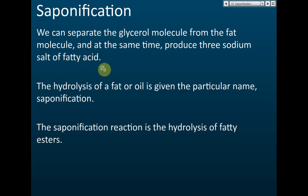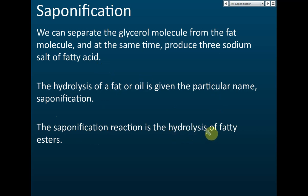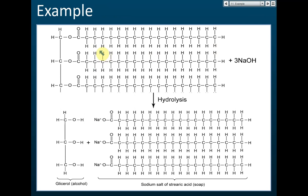To make soap, we heat cooking oil with sodium hydroxide because cooking oil contains a lot of fatty acids. The sodium hydroxide undergoes hydrolysis — it hydrolyzes the fat molecules, breaking the bonds between the fatty acids and the glycerol. This hydrolysis of fat or oil by alkali has a specific name: it is called saponification. Saponification is the hydrolysis of a fatty ester.